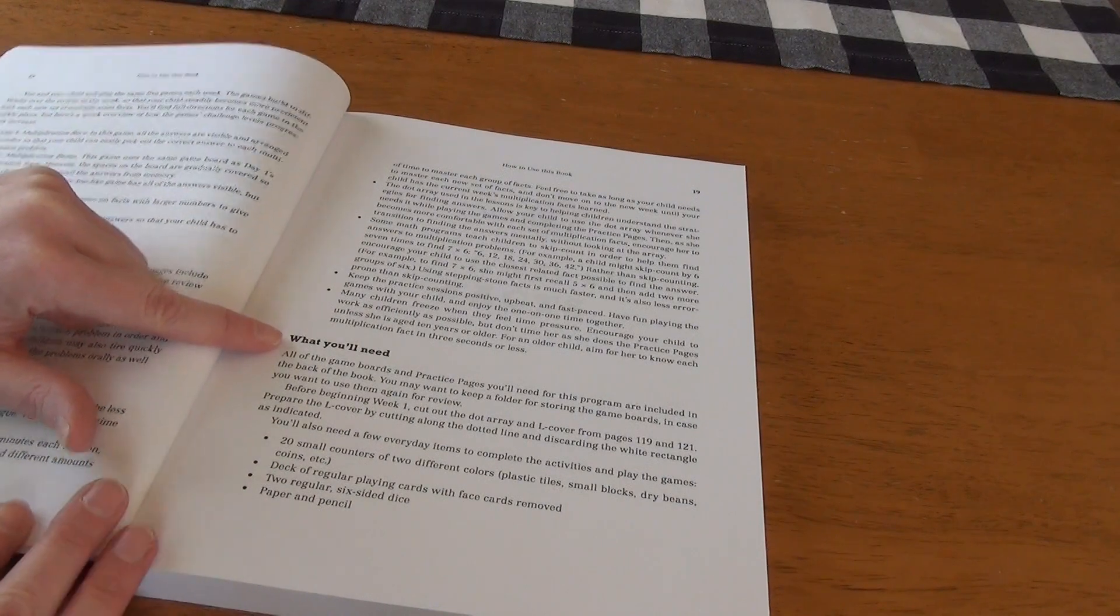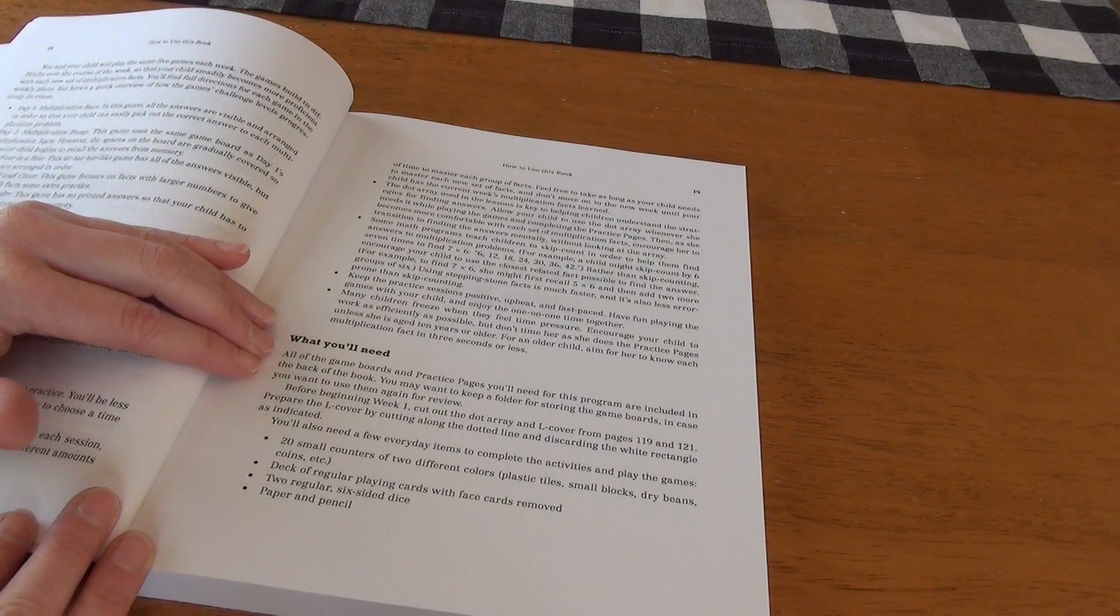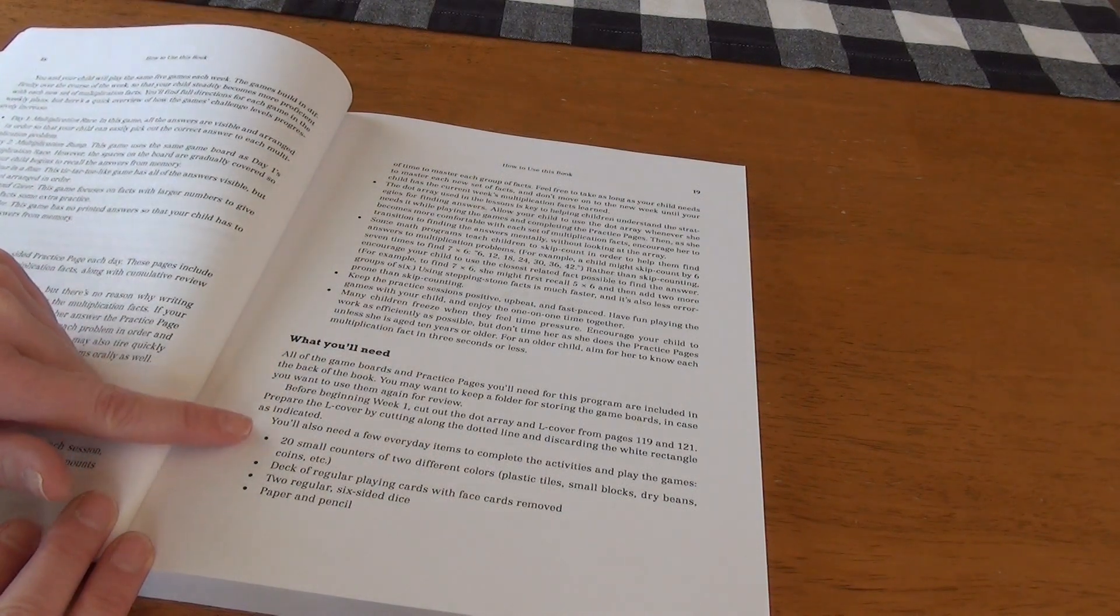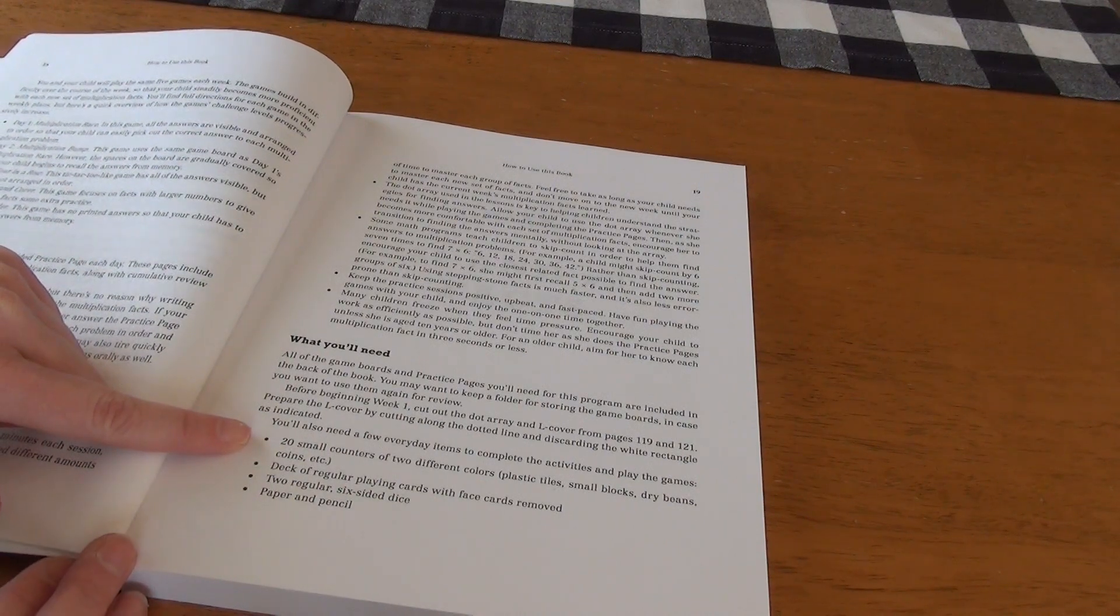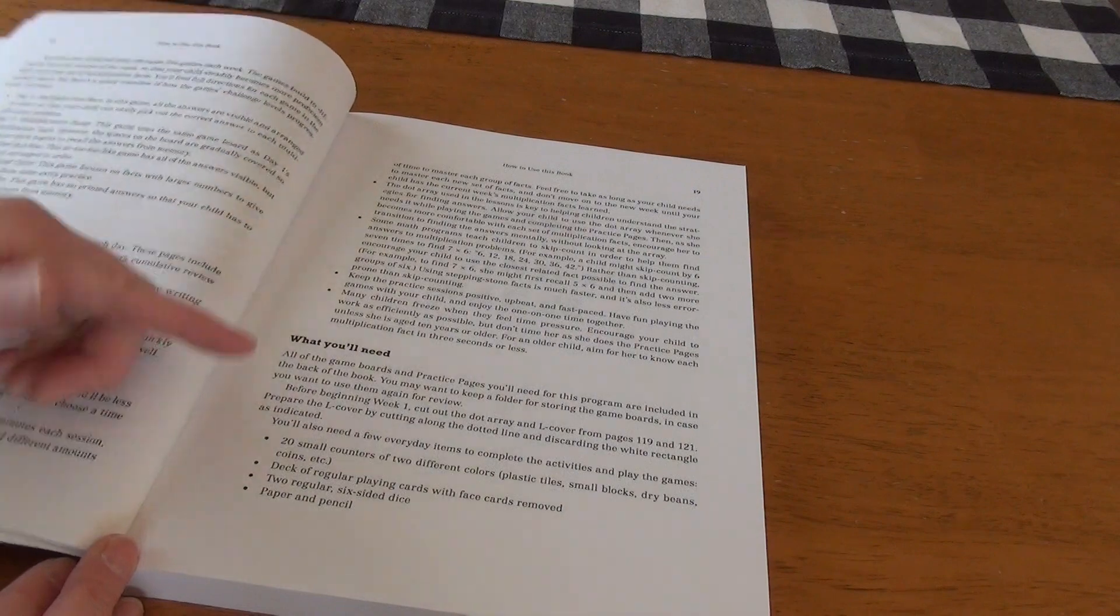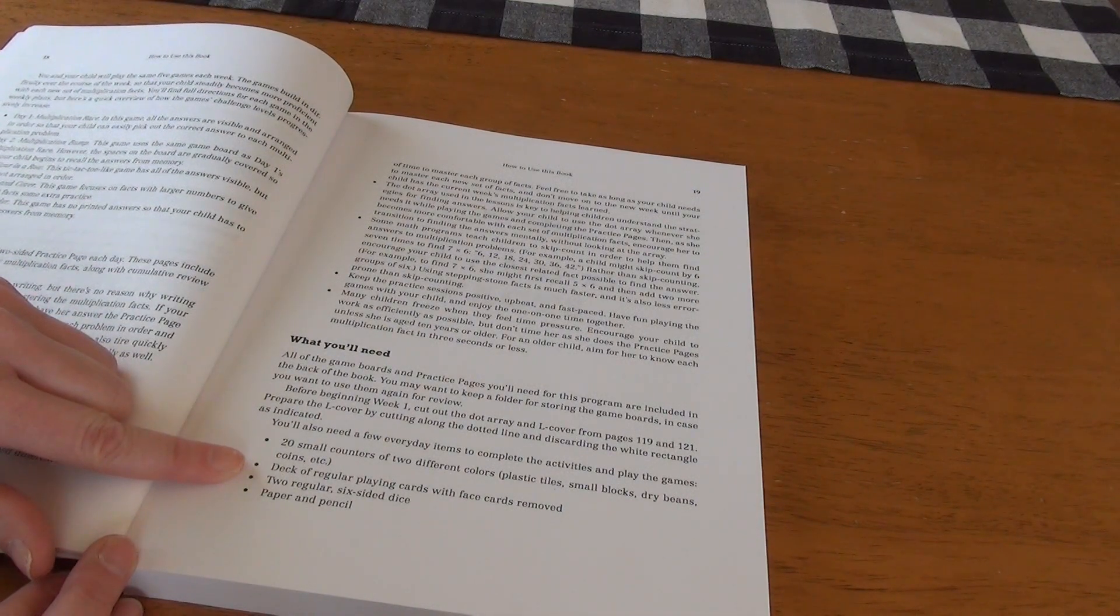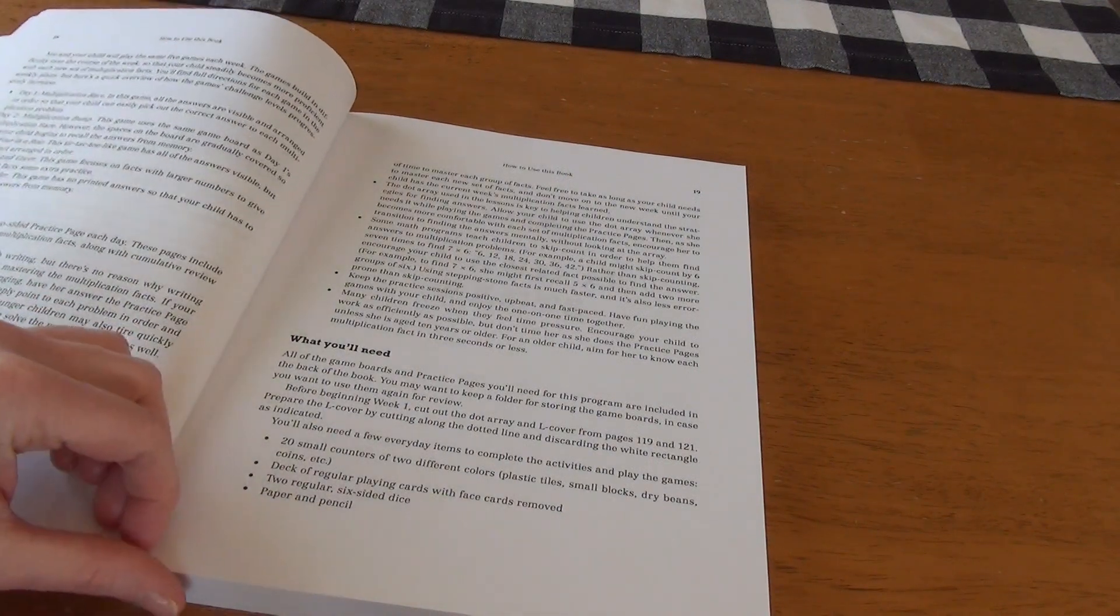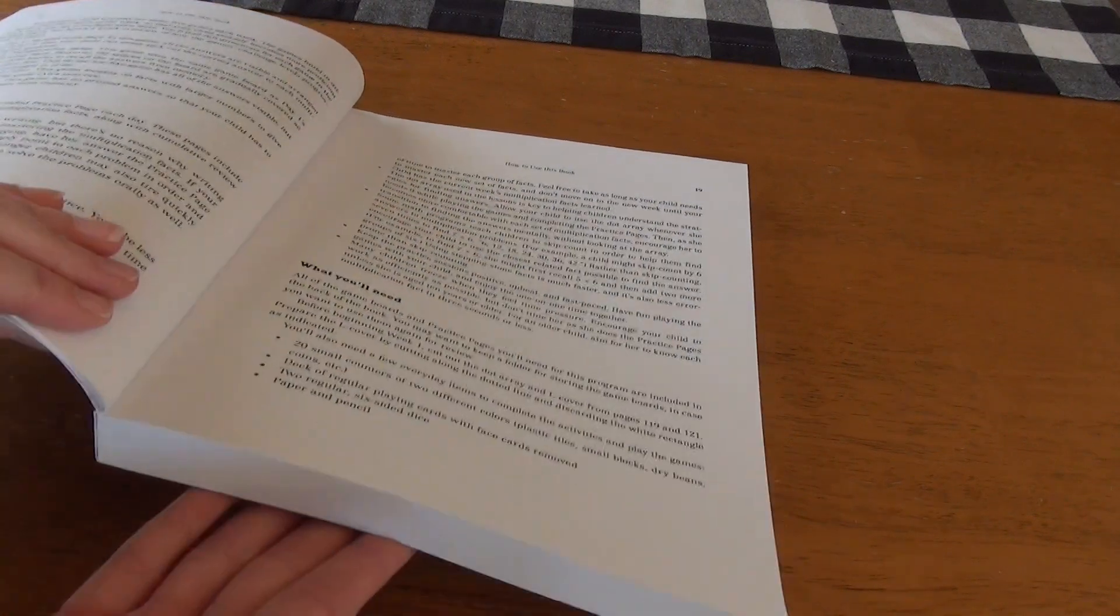Then what you'll need, everything is pretty much included in the book. So you have your practice pages, your game pages, the game boards, and then you'll just need a few little everyday items here. 20 small counters that could be plastic tiles, blocks, dry beans, Legos, coins, whatever. A deck of regular playing cards with the face cards removed. Two regular six-sided dice, paper and pencil. Very minimal things that you're going to need. Like I said, almost everything is in the book.